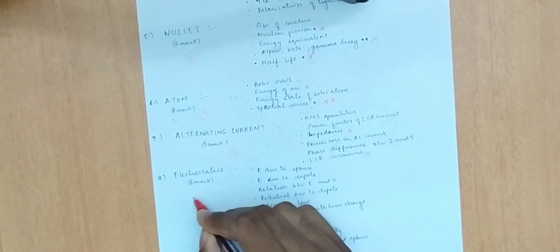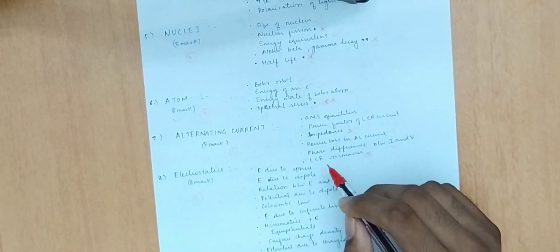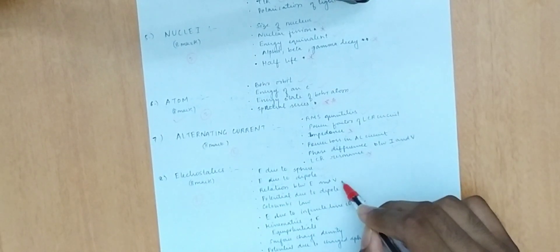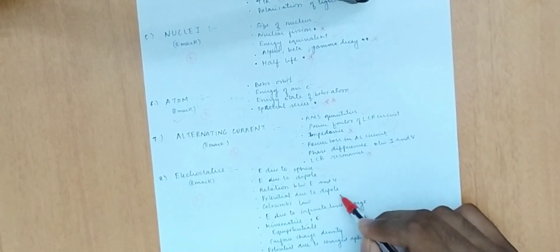Electrostatics is very important — two questions are expected. Topics include electric field due to a sphere, dipole, potential due to a dipole, Coulomb's law, electric field due to an infinite line charge, equipotential surfaces, surface charge density, and potential due to a charged sphere.